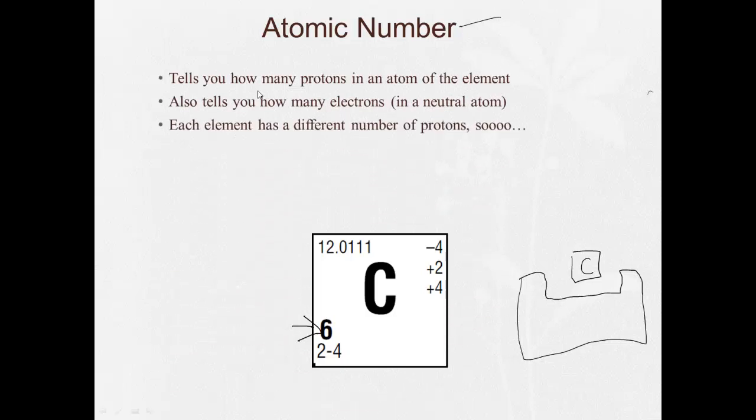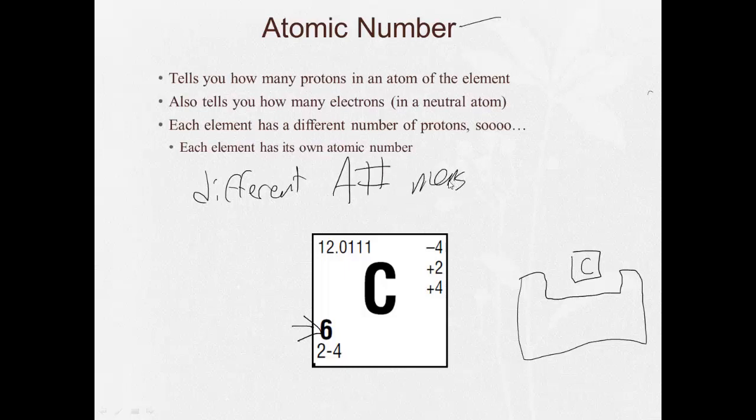Because each element has a different number of protons, so each element has its own atomic number. Different atomic number means different element. Same atomic number, same element.